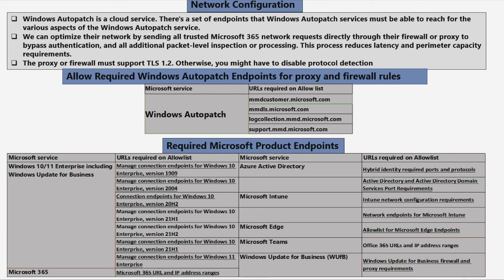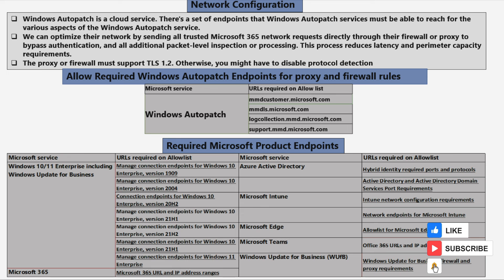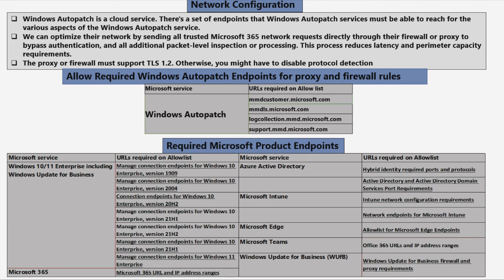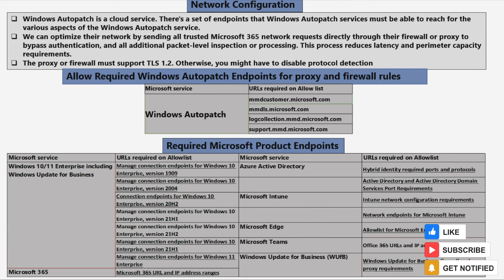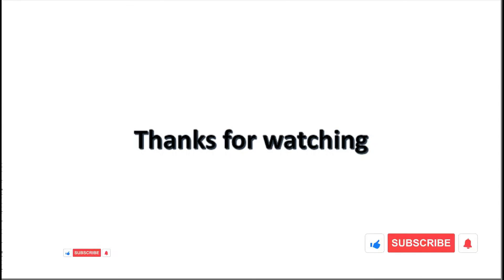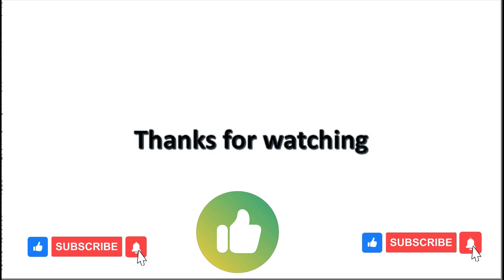The next requirement is to allow the required Windows Autopatch endpoints for proxy and firewall rules. To work properly, Windows Autopatch requires four URLs to be added to the allowed list in the firewall rules. The next prerequisite is related to required Microsoft product endpoints — we need to ensure that Windows 10/11 Enterprise, including Windows Update for Business, Microsoft 365, Azure Active Directory, Microsoft Intune, Microsoft Edge, Microsoft Teams, and Windows Update for Business services and their respective URLs are added to the allowed list. I hope this has been an informative video. Thank you very much for watching.